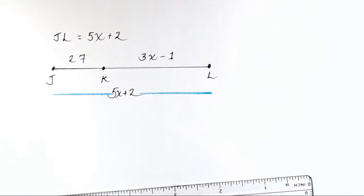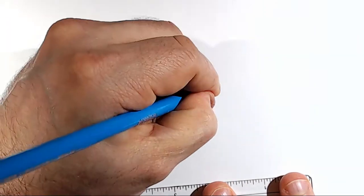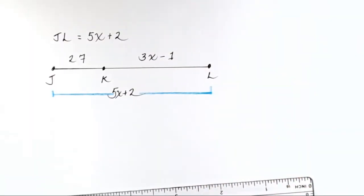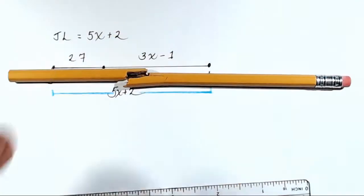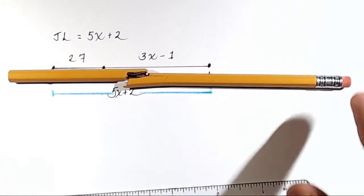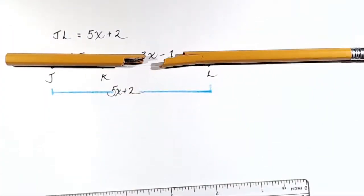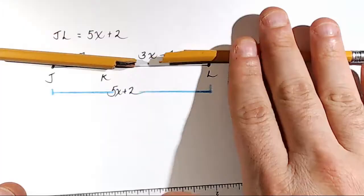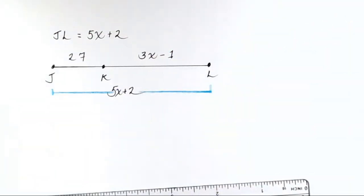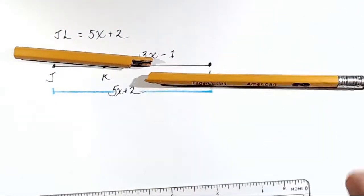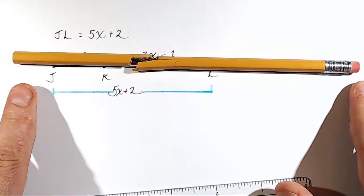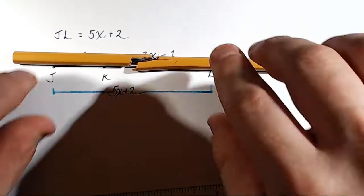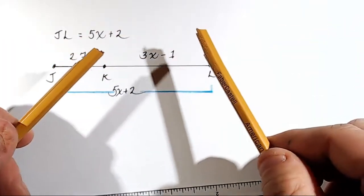Okay, now what does the segment addition postulate tell us? It tells us that if you want to know the complete distance from one end of a thing to the other, you have to add the distances of each part. Okay, these are segment right there plus a segment right there. You put them together, you add them together, you get the total distance. That's the segment addition postulate demonstrated with the broken pencil.